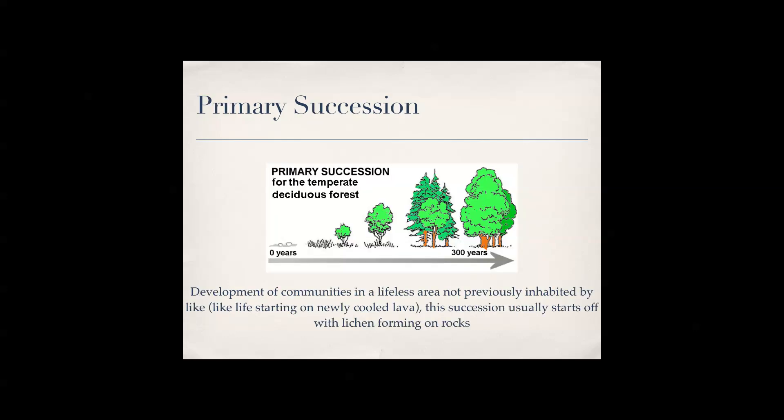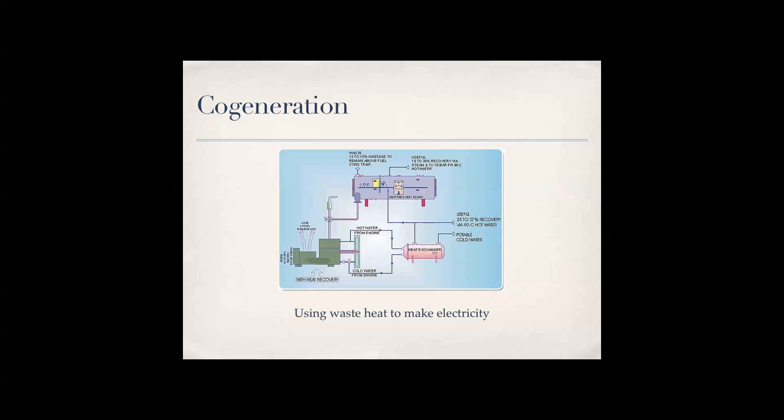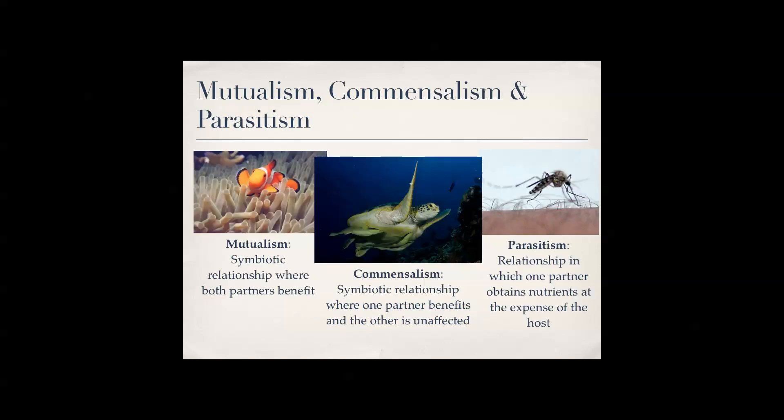Cogeneration is using waste heat to make electricity. Mutualism is when an organism works with another organism and they both benefit from their interactions — it's a symbiotic relationship where both partners benefit.